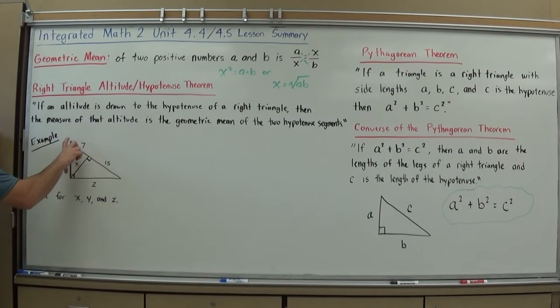But then I also have this altitude which breaks it up into a couple different triangles. I have this smaller one comprising of side lengths Y, X, and 7. And I kind of have this more medium-sized one comprised of 15, X, and Z. And I can use this theorem here to kind of get me started and find one of the lengths and then from there use Pythagorean theorem. I can also set up a bunch of different similar triangles and use ratios there. So I'm going to kind of show both and let you kind of decide what works for you.